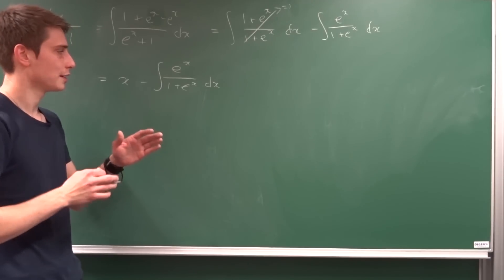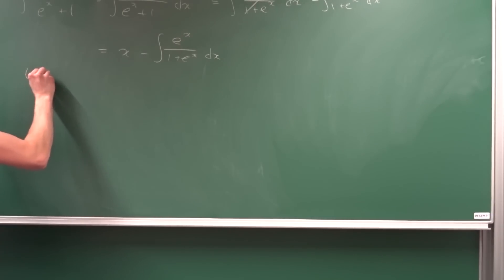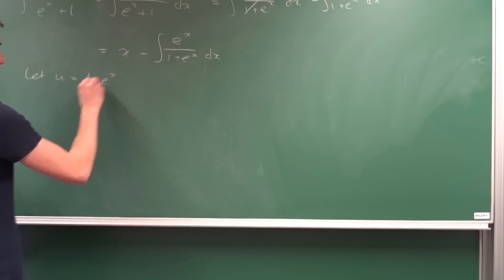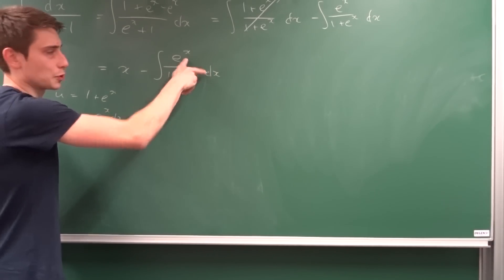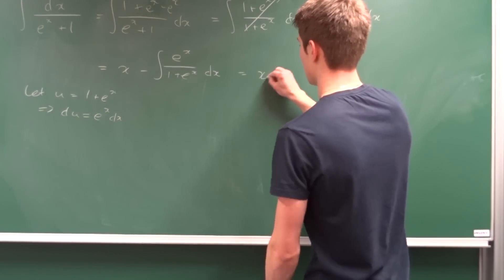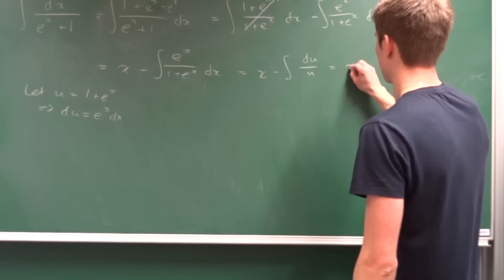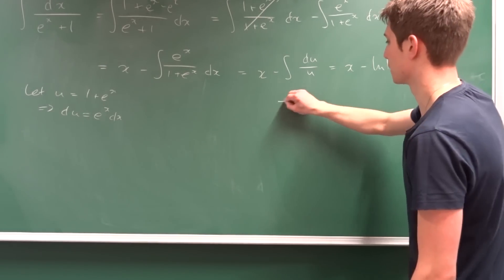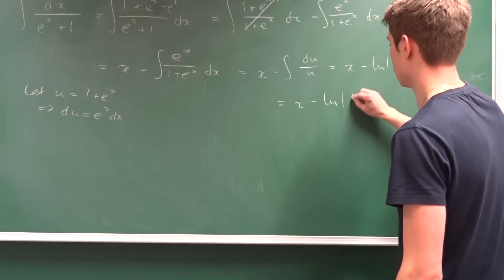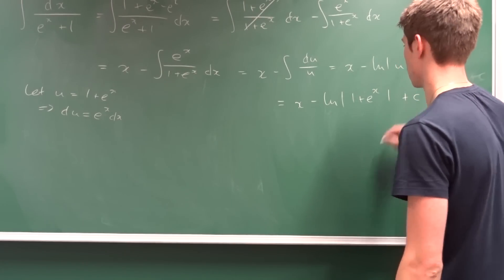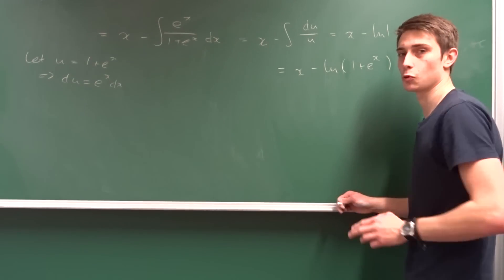We introduce a u-substitution: let u equal 1 plus e to the x. Then du equals e to the x dx, which is exactly the numerator. The remaining integral becomes the integral of du over u, which is just the natural log of u. Substituting back, the final answer is x minus ln of 1 plus e to the x plus an arbitrary constant C. That was the third method.